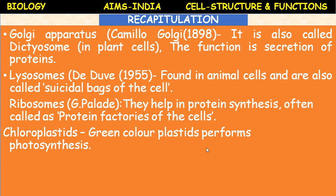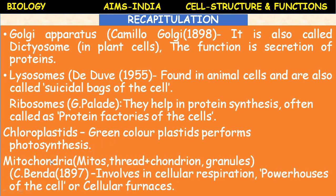Plastids are unique structures present only in plant cells. Chloroplasts are especially green in color and perform photosynthesis; they contain the green pigment called chlorophyll. Mitochondria — the name meaning mitos (thread) and chondrion (granules) — was named by Benda in 1897. Mitochondria are involved in cellular respiration, hence called powerhouses of the cell or cellular furnaces.